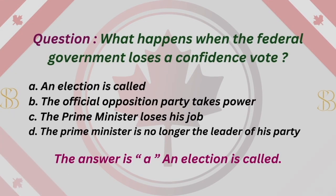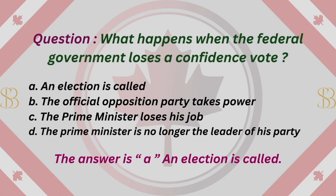Question: What happens when the federal government loses a confidence vote? A. An election is called. B. The official opposition party takes power. C. The prime minister loses his job. D. The prime minister is no longer the leader of his party. The answer is A. An election is called.